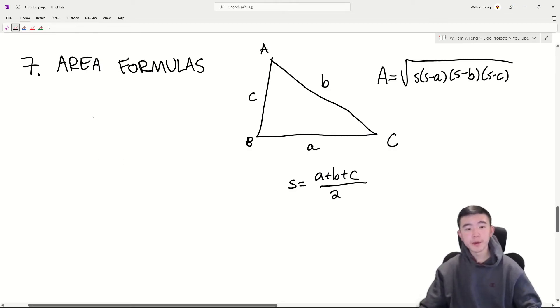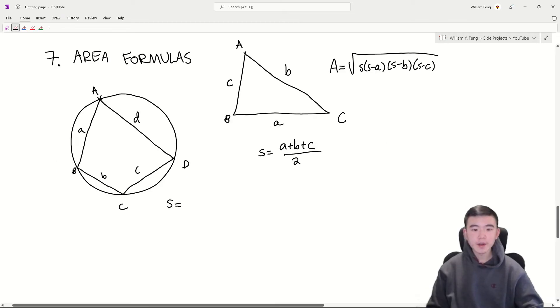Now Brahmagupta's formula tells us a similar thing, but for cyclic quadrilaterals. So if you have a quadrilateral inscribed in a circle called ABCD, and its side lengths are A, B, C, and D. And similarly to the triangle, we define S is equal to the semiperimeter of the quadrilateral. Then we know that the area of the quadrilateral is equal to the square root of S minus A times S minus B times S minus C times S minus D.